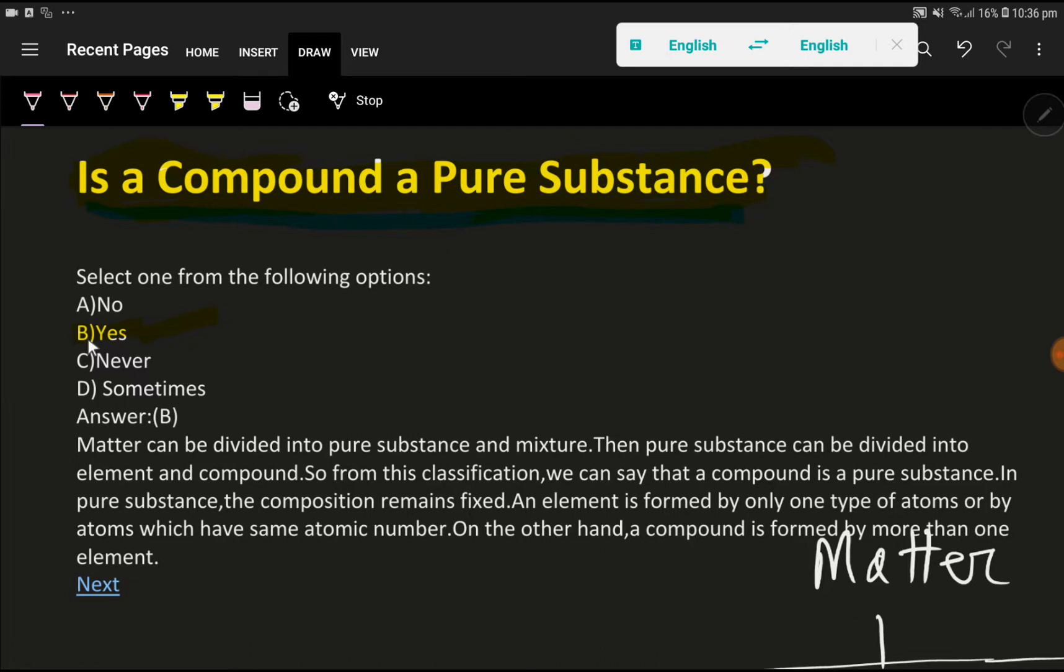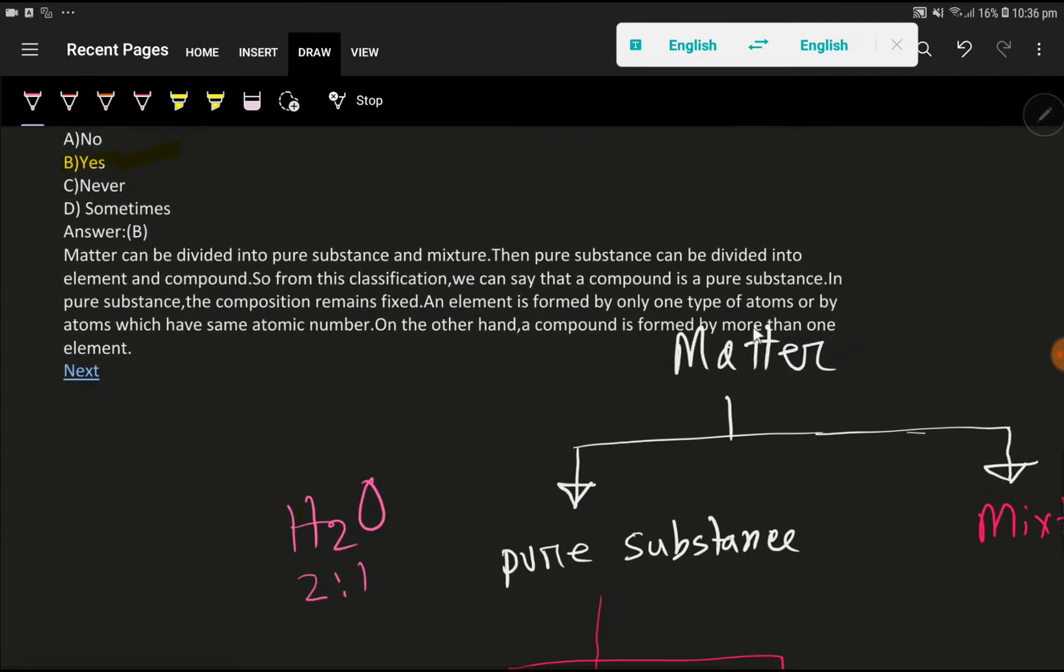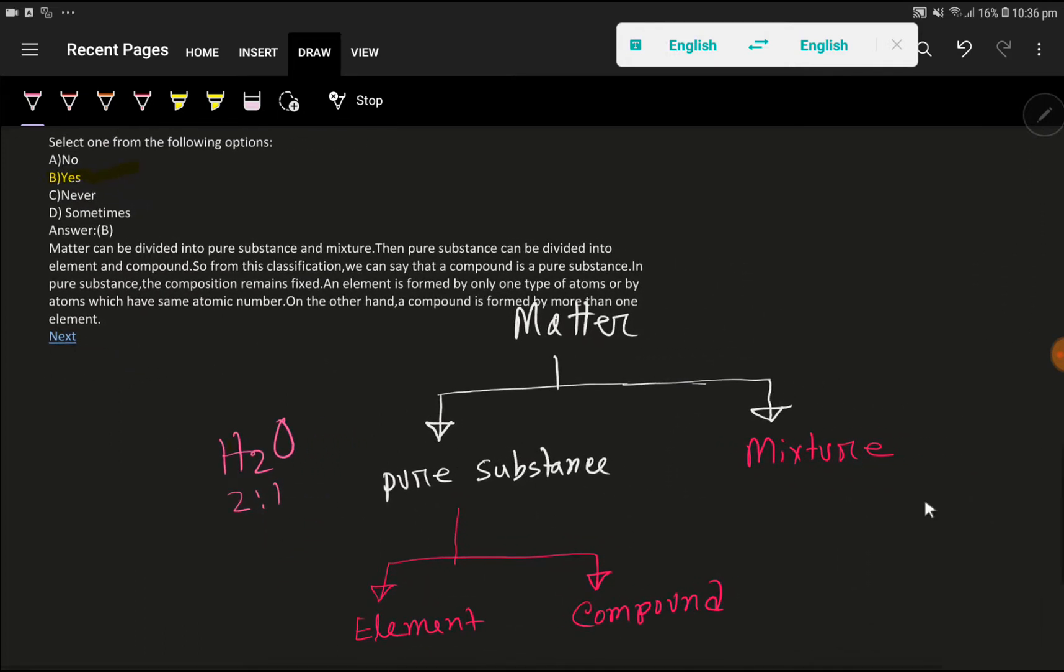A compound is a pure substance. Look, this is matter. Matter can be divided into pure substance and mixture. Then we can divide the pure substance further.